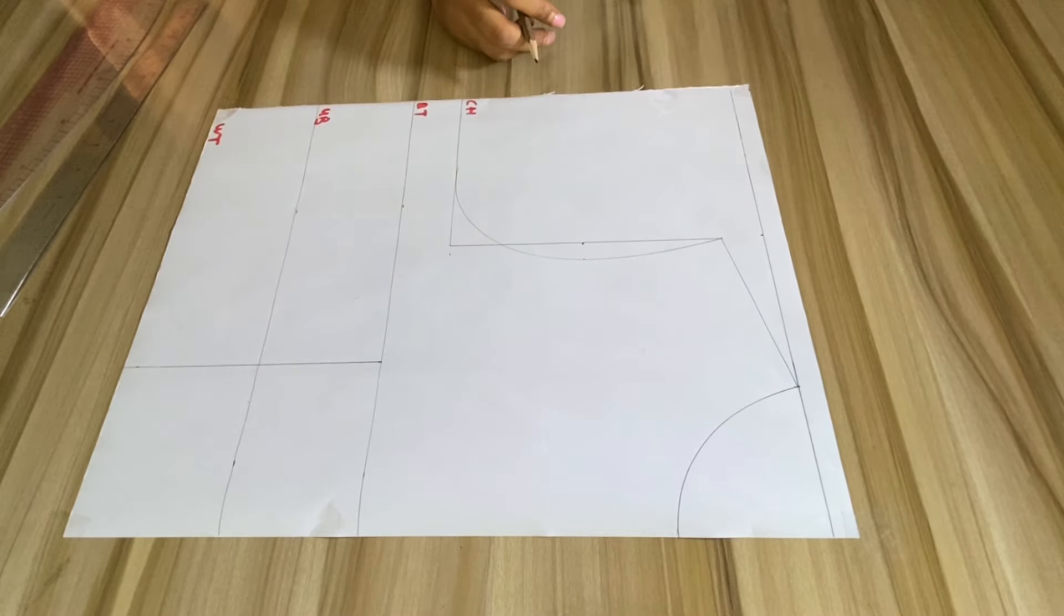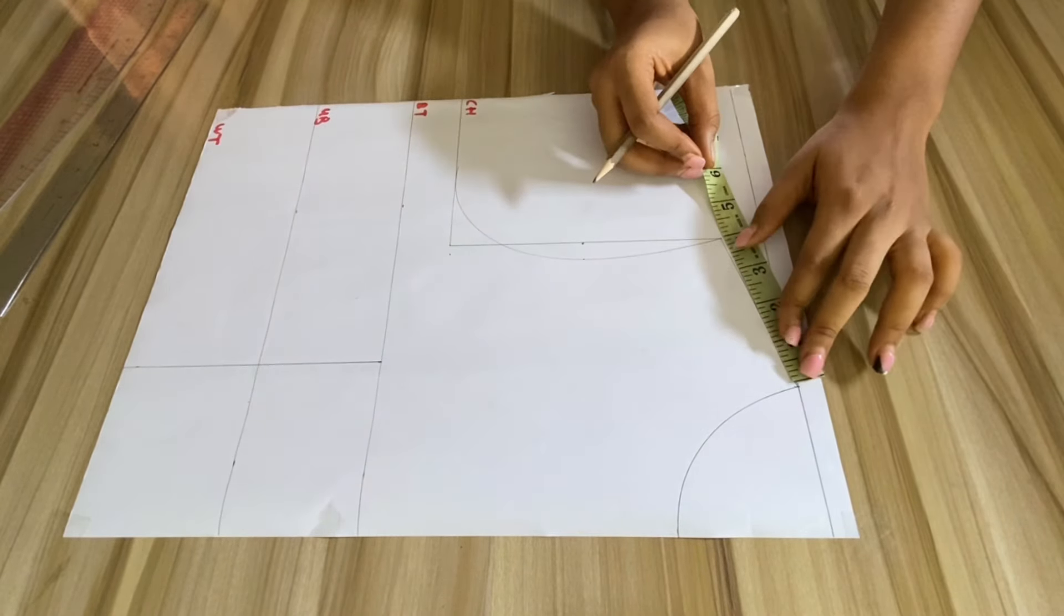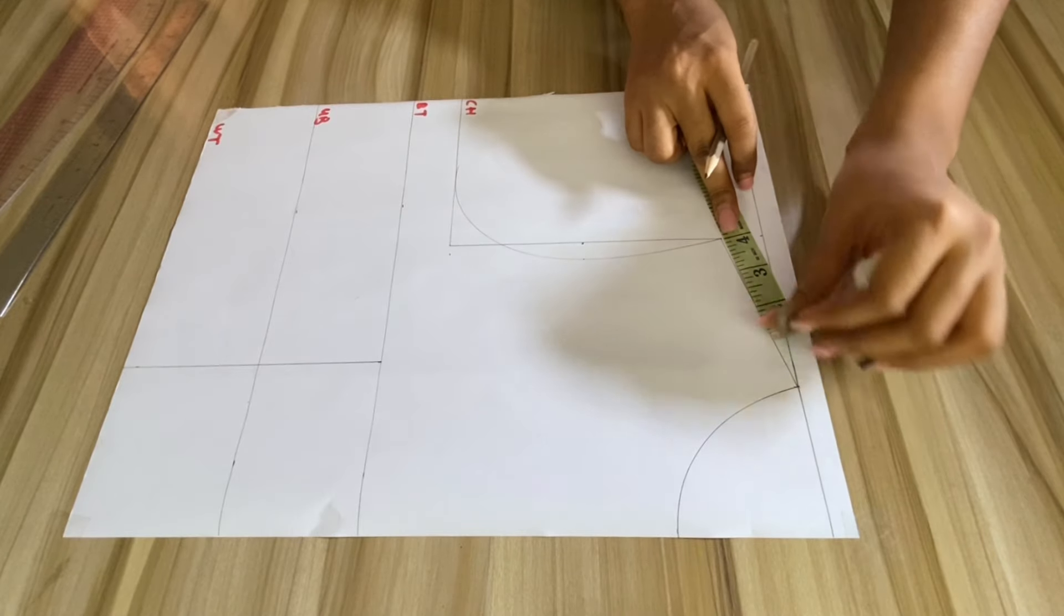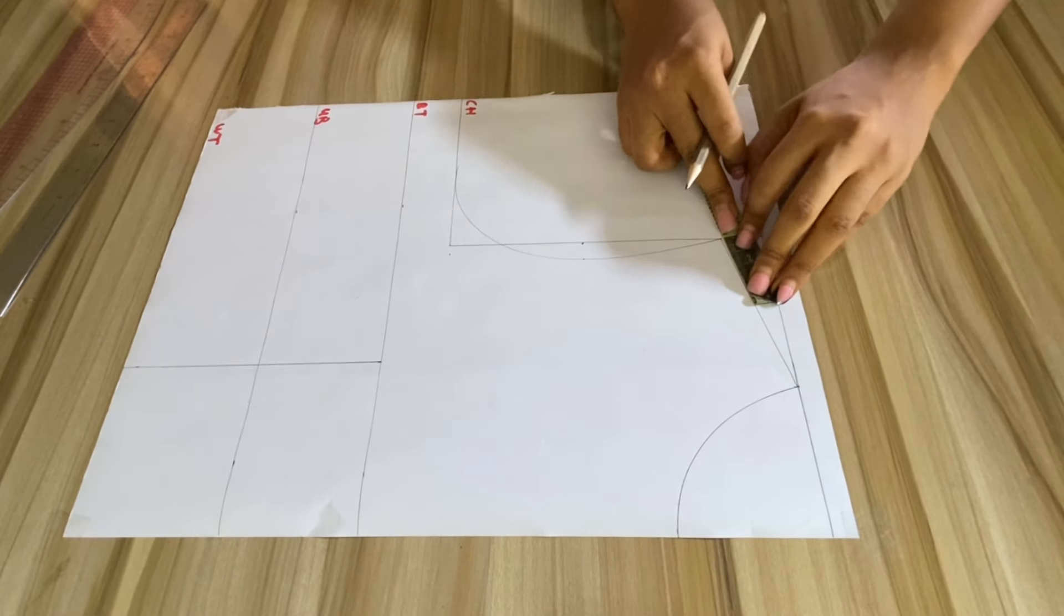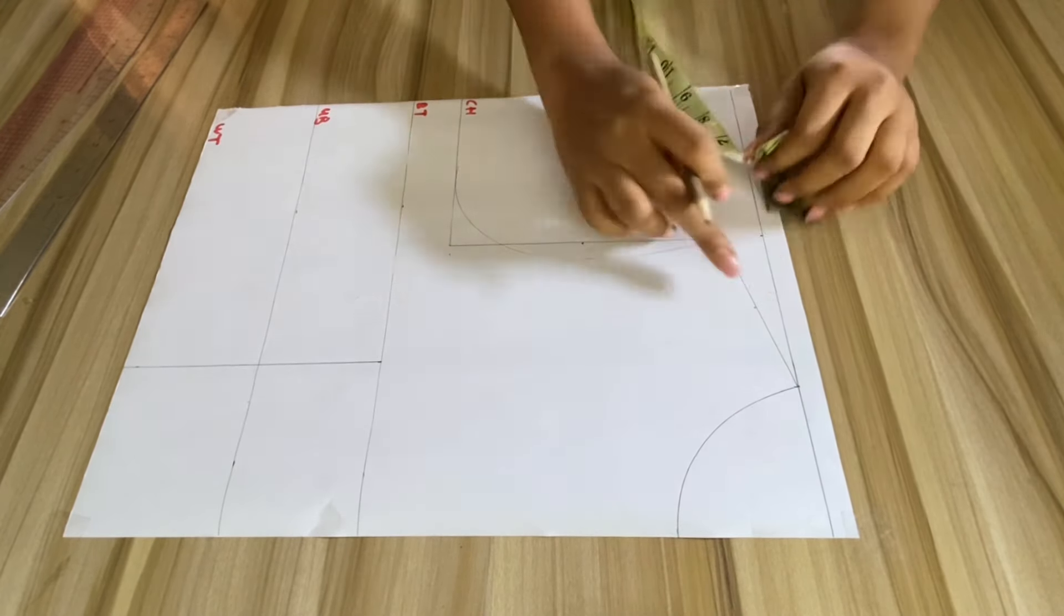Now from the shoulder, I'm just going to be dividing the shoulder into two, and I'm just going to mark the point and connect that to the first point.